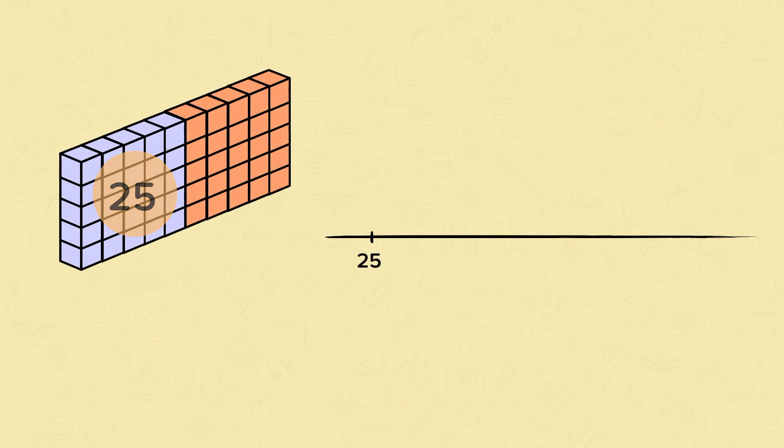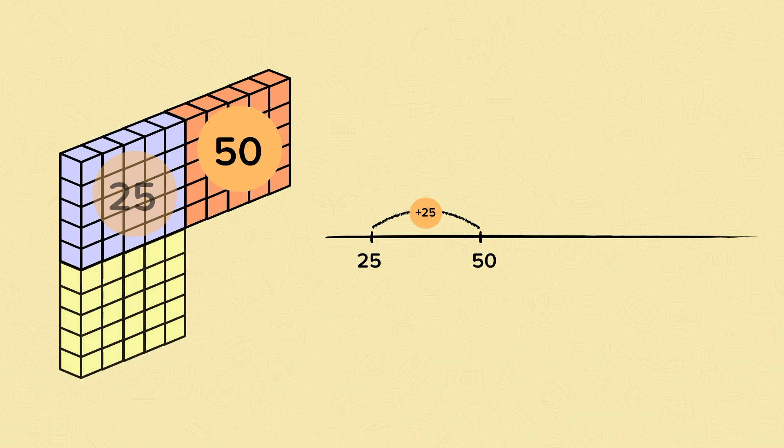If we add another block of 25, 25 plus 25 is 50. Now let's add another block. 50 plus 25 is 75.